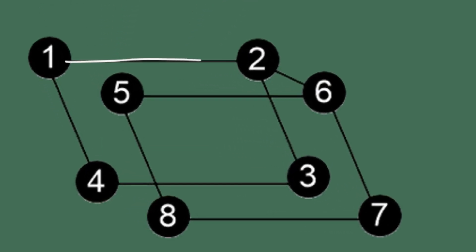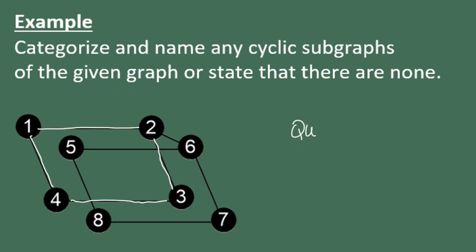For example, we could travel from vertex one to vertex two, from two to three, from three to four, and back to vertex one. This cyclic subgraph would be called a quadrilateral because it has four edges, like a quadrilateral polygon. Or you can simply say it's a fourgon.